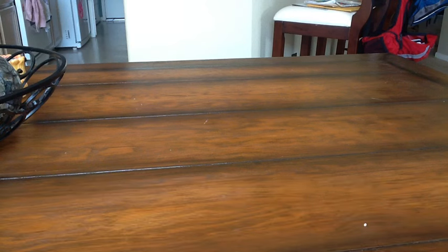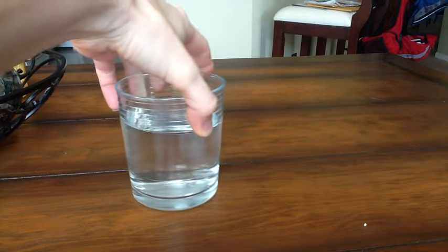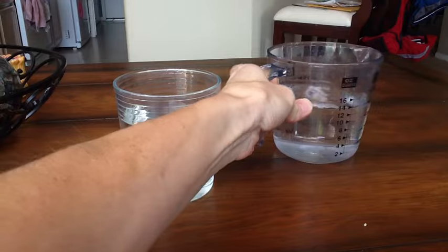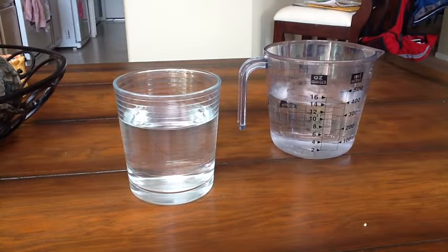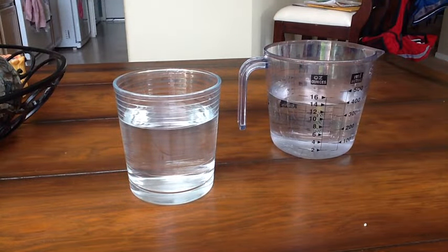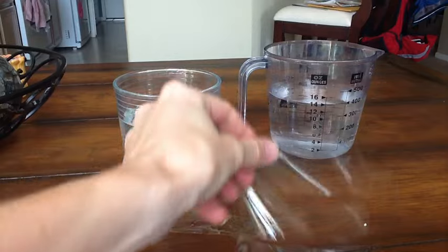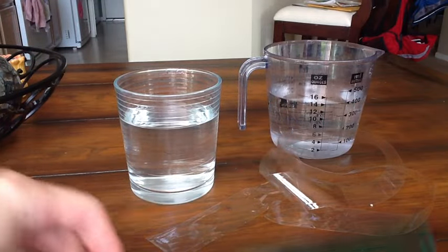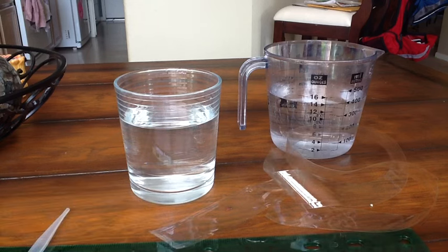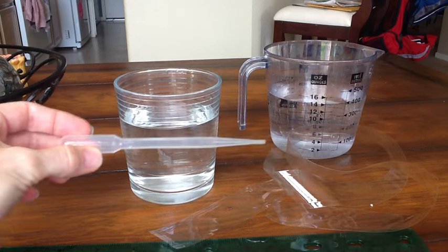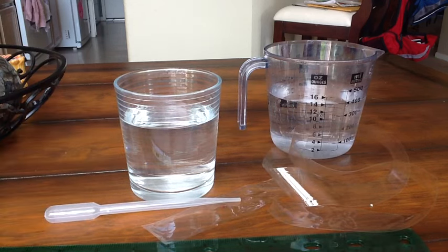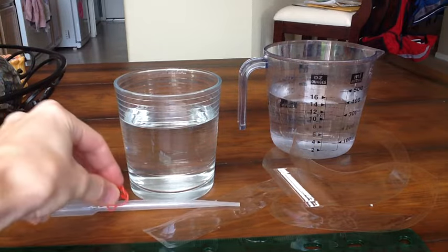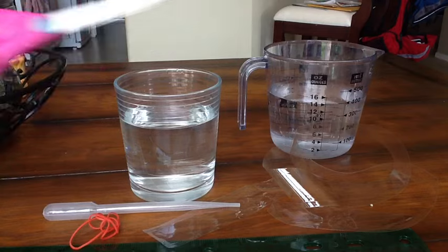First let me run through some of the materials. You're going to need preferably a beaker filled with water. I have a cup here. And then you're going to have your solution that you're going to be filling up the dialysis tubing with. You're going to need dialysis tubing, a ruler, a medium-sized pipette, some really thin rubber bands, and then a pair of scissors.